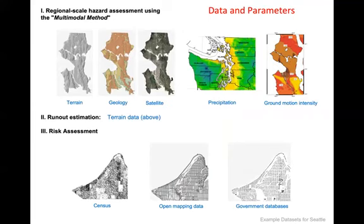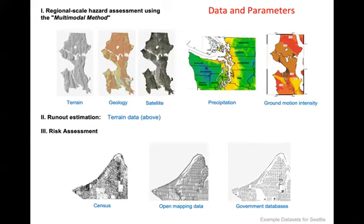The kind of data needed to feed this risk assessment is pretty basic. For the first step, we need information on terrain, geology, and satellite imagery, as well as the intensity of the forcing — either storm intensity or ground motion intensity. For the second step — runout estimation — we need terrain data gathered from the digital elevation model in the first step. For the third step — risk assessment — we typically use a combination of census data, open mapping data, government databases, and in some cases data from NGOs.